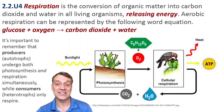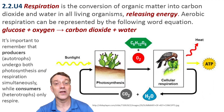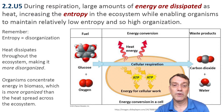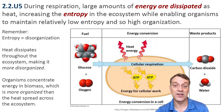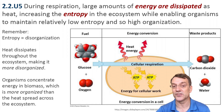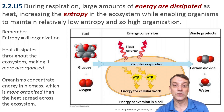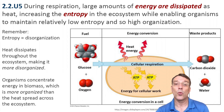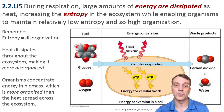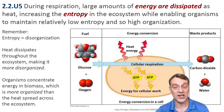Understanding these processes as systems helps us analyze the flow of energy through ecosystems. During respiration, large amounts of energy are dissipated or lost as heat, and this increases entropy or disorganization in the ecosystem. However, this energy release enables organisms to maintain their highly organized structures with relatively low entropy. This follows the second law of thermodynamics, which states that entropy in a system tends to increase over time.